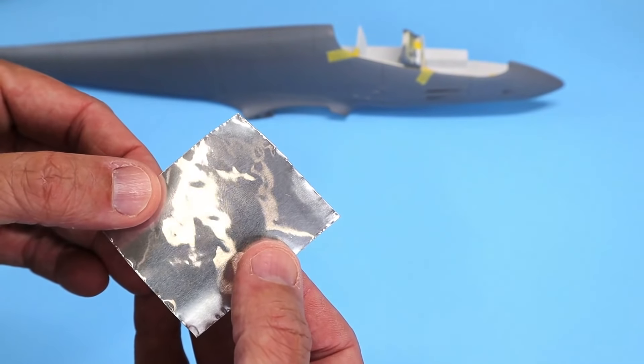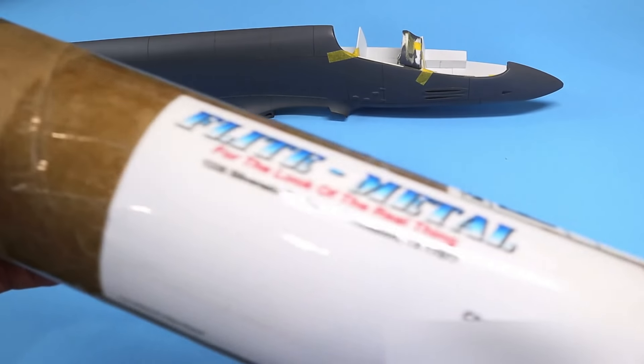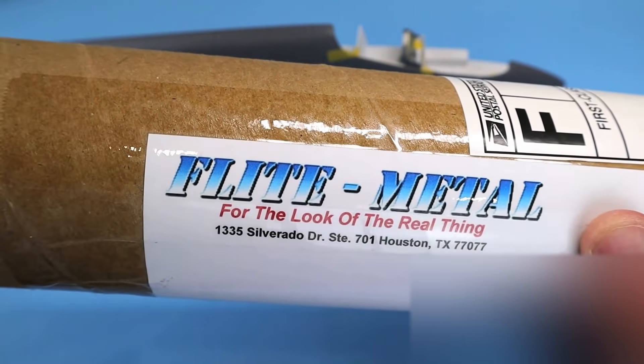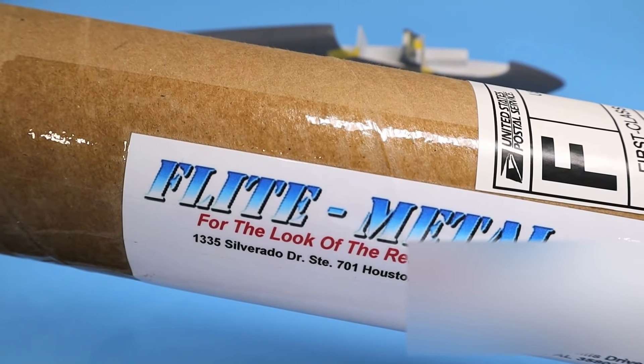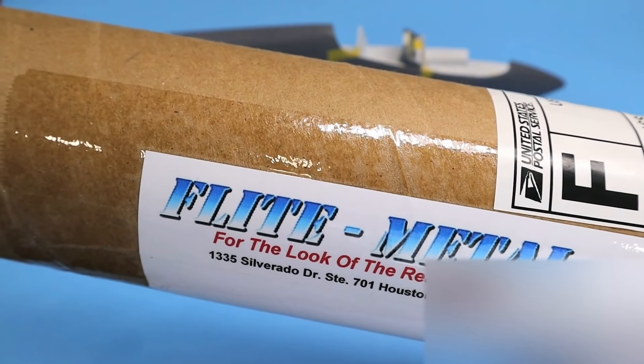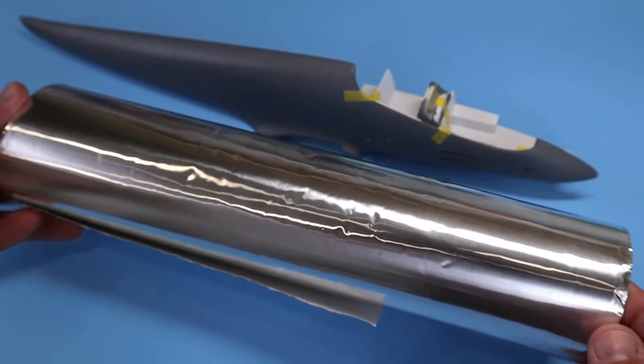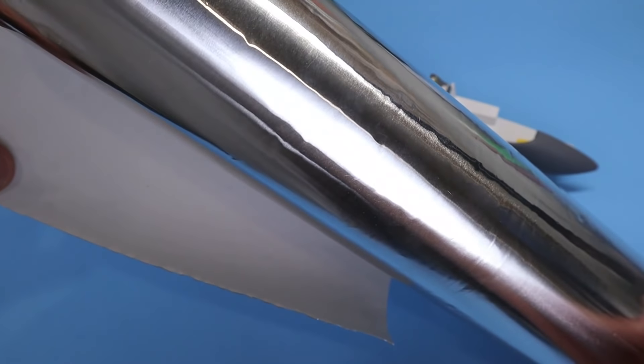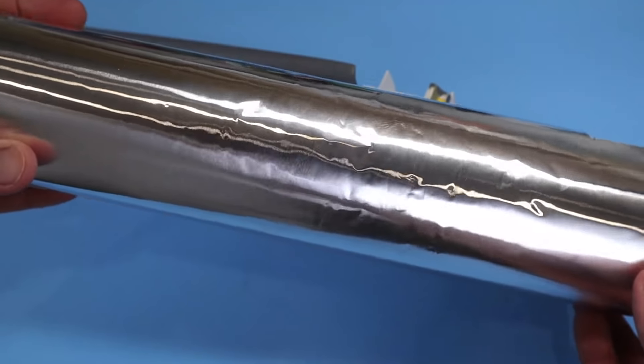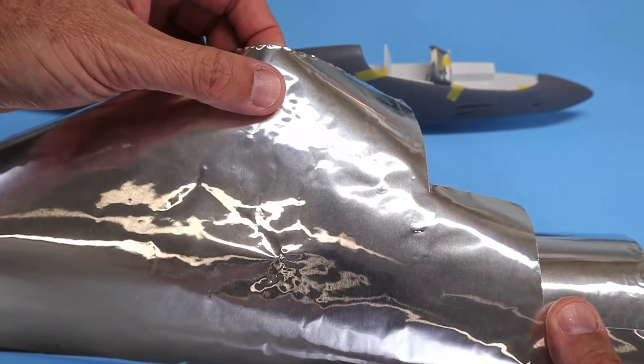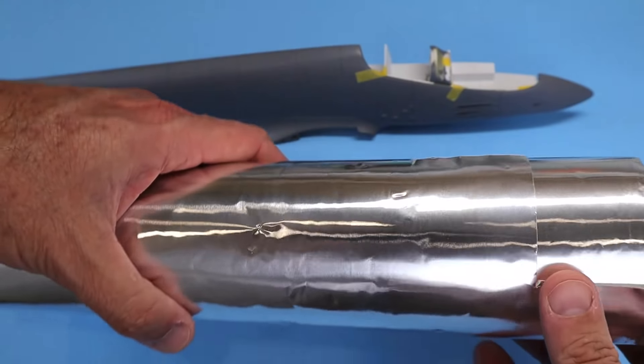First off is this aluminum adhesive foil. I ordered mine from Flight Metal Products, but you can also use HVAC tape available at any home supply store. So the stuff from Flight Metal comes on a 12-inch by roughly I think six feet in length, so you can just cut off what you need to apply to a specific panel.